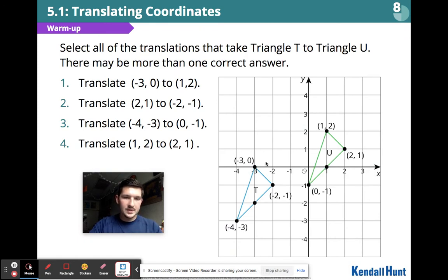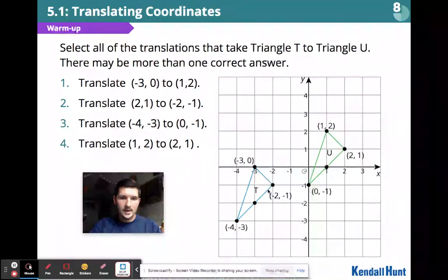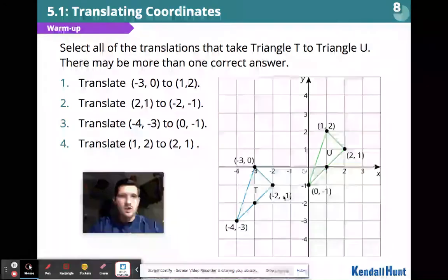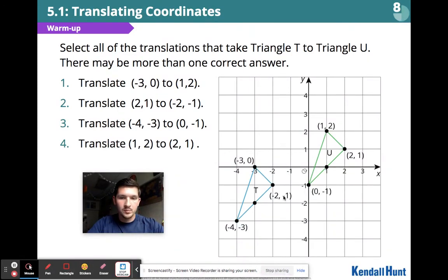Now looking at number 2, it says translate 2, 1 to negative 2, negative 1. They match up correctly and are the same vertices, but the issue is that's changing our rule. We're going from U to T instead of from T to U. So number 2 doesn't work.